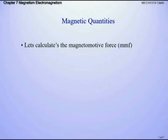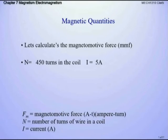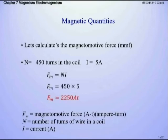Let's do some calculations. We're going to calculate the magnetomotive force of a coil that has 450 turns on it with 5 amps through it. It's just 5 times 450 — F_M = N × I = 450 × 5 = 2,250 amp-turns. In movies, when you see an electromagnetic pulse gun, the magnetic pulse is very large — lots of turns and coils of wire with a lot of current.